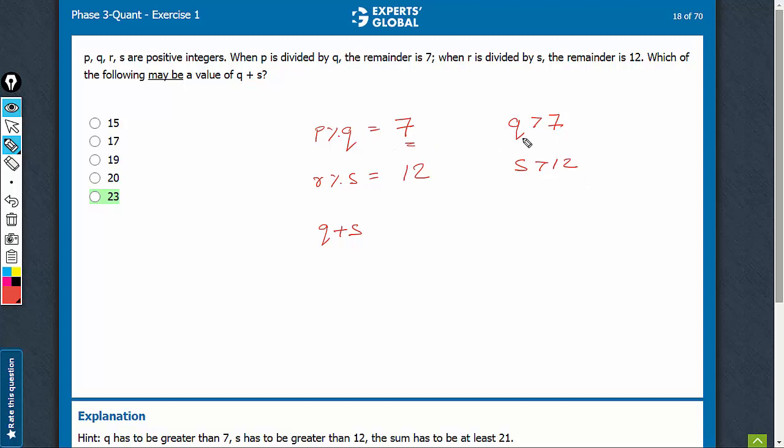So the remainder here is 7, the divisor has to be greater than 7. If the remainder here is 12, the divisor has to be greater than 12.